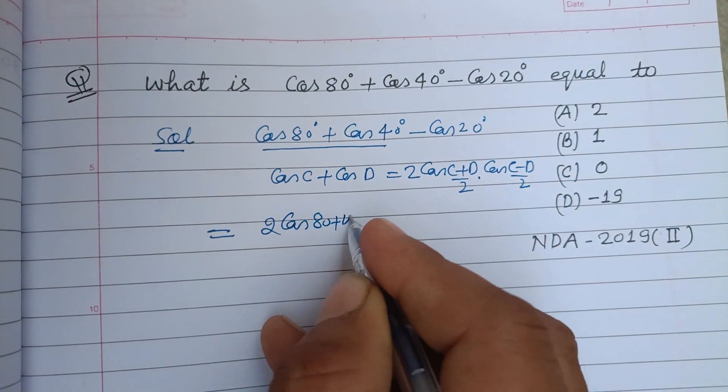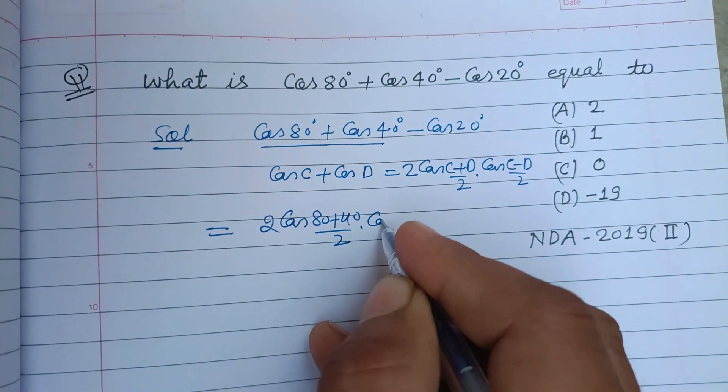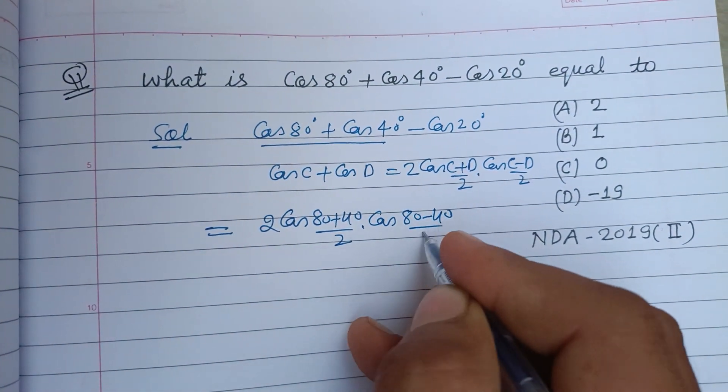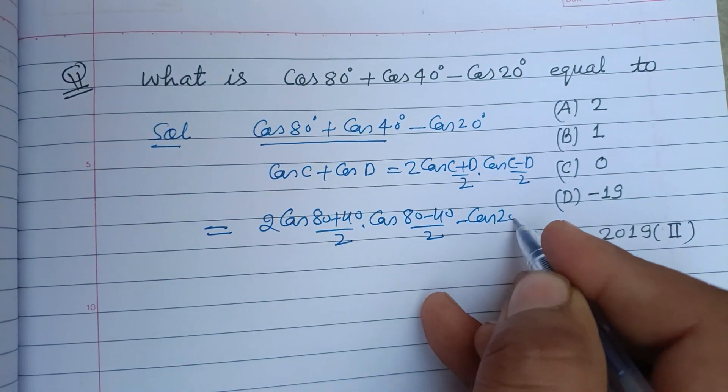This equals 2 cos(120°/2) into cos(40°/2) minus cos 20°.